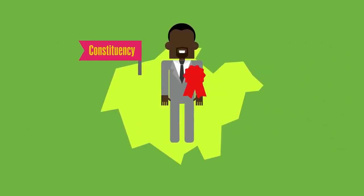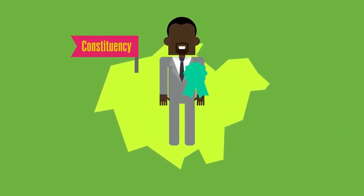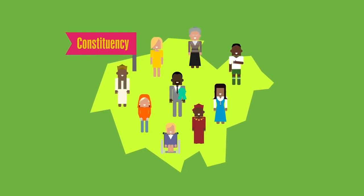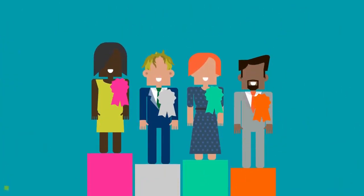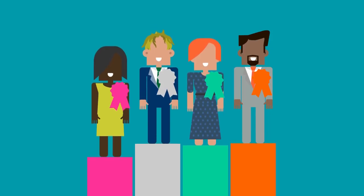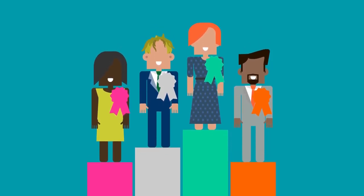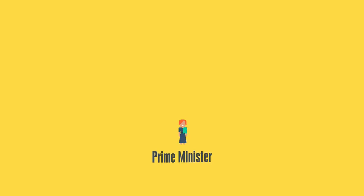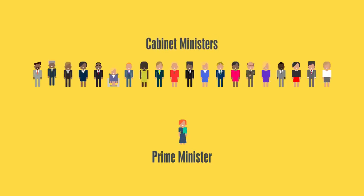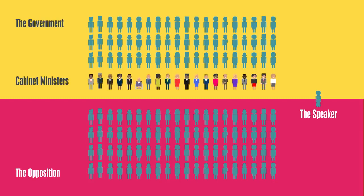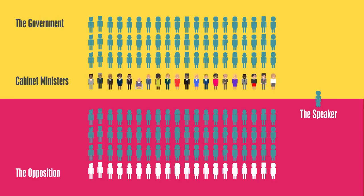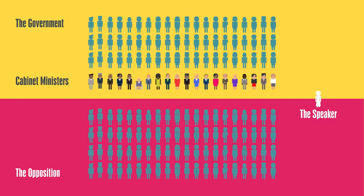MPs belong to either a political party or are independent, and are elected by constituents of the area they want to represent. The leader of the party that has the most MPs elected after a general election becomes the Prime Minister and heads up the government. They choose a cabinet made up of 20 senior ministers, who coordinate each government department's work. Parties not in power are called the opposition. MPs from the opposition and government question the government on policy and proposed laws. The Speaker keeps the House in order by chairing these debates.